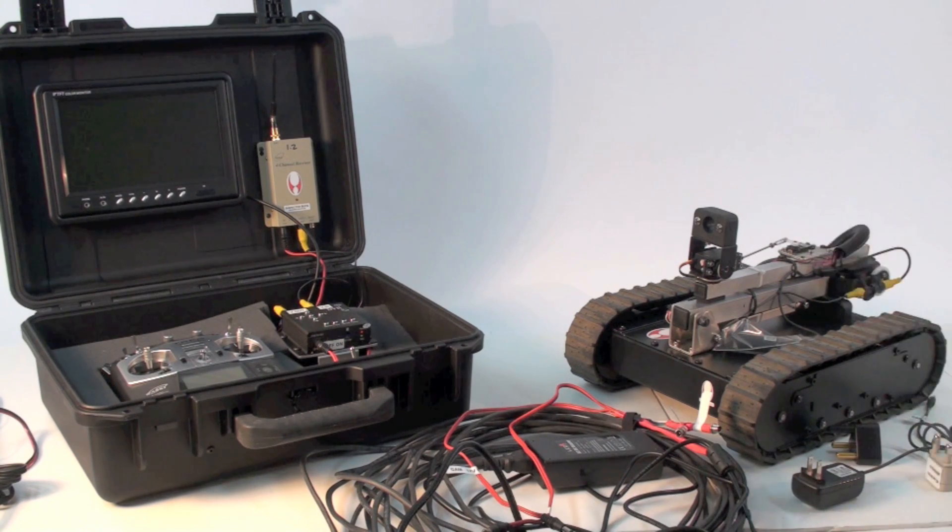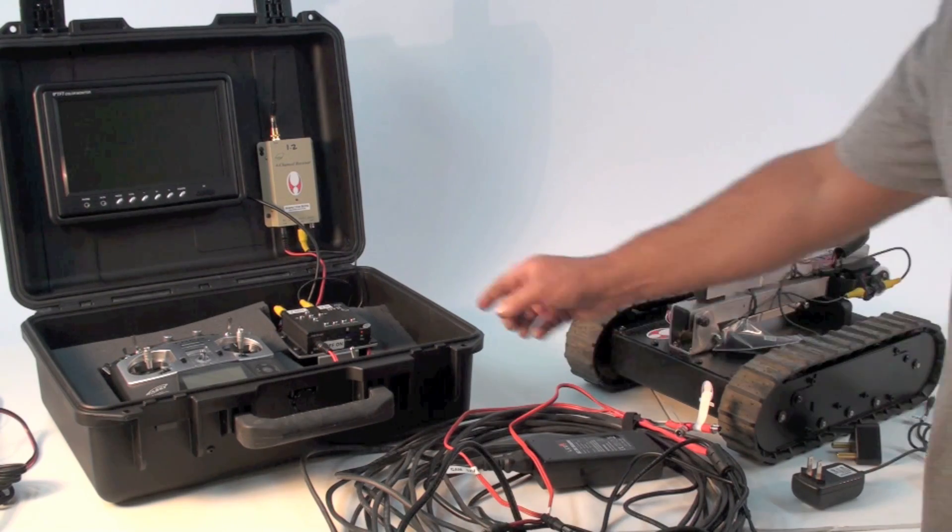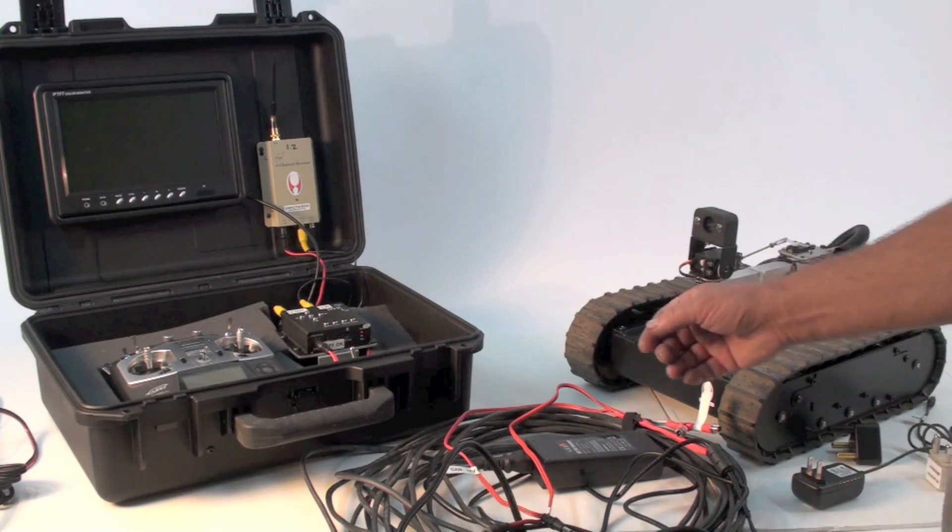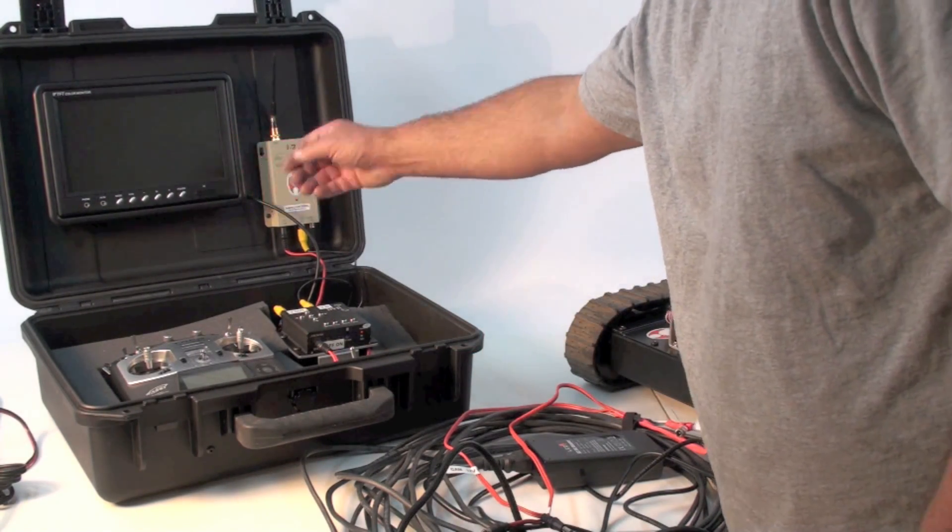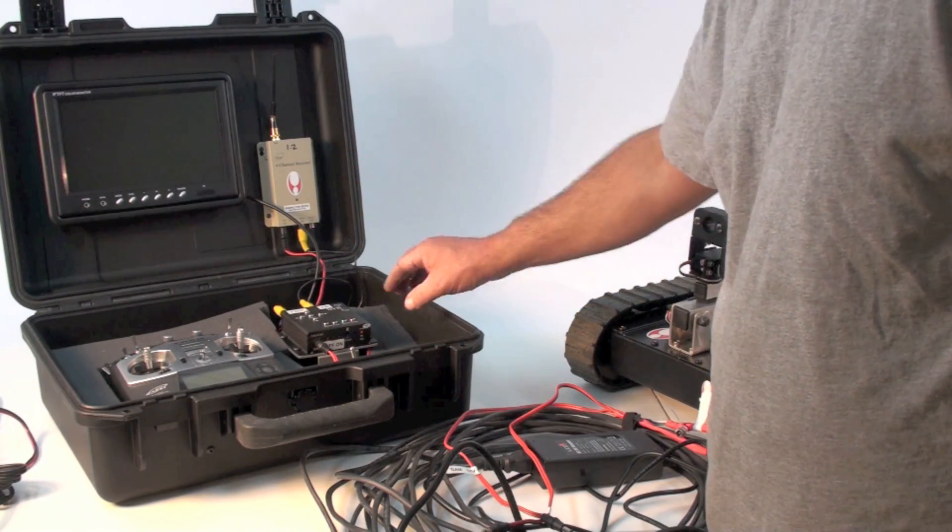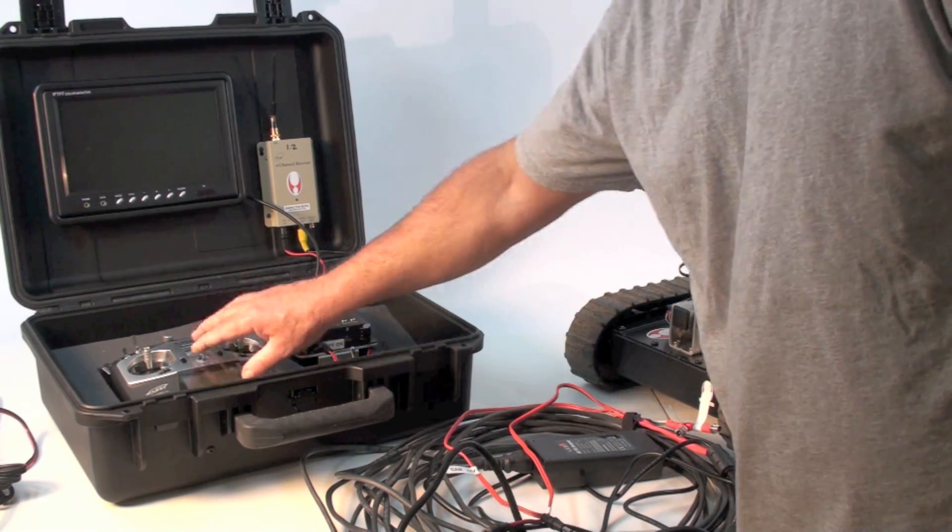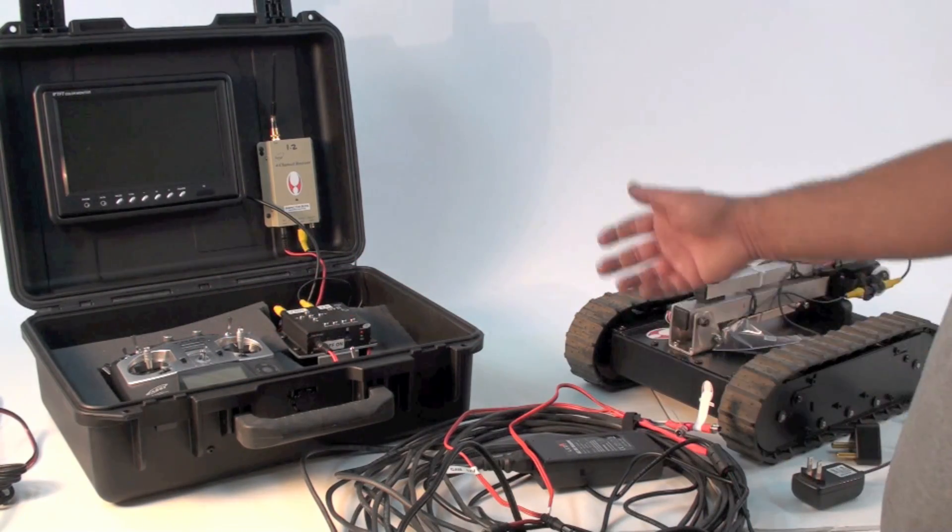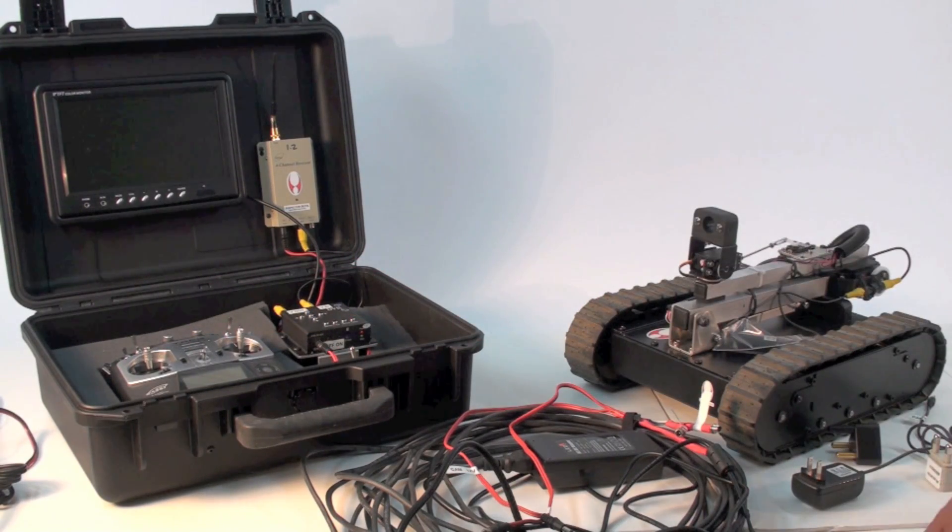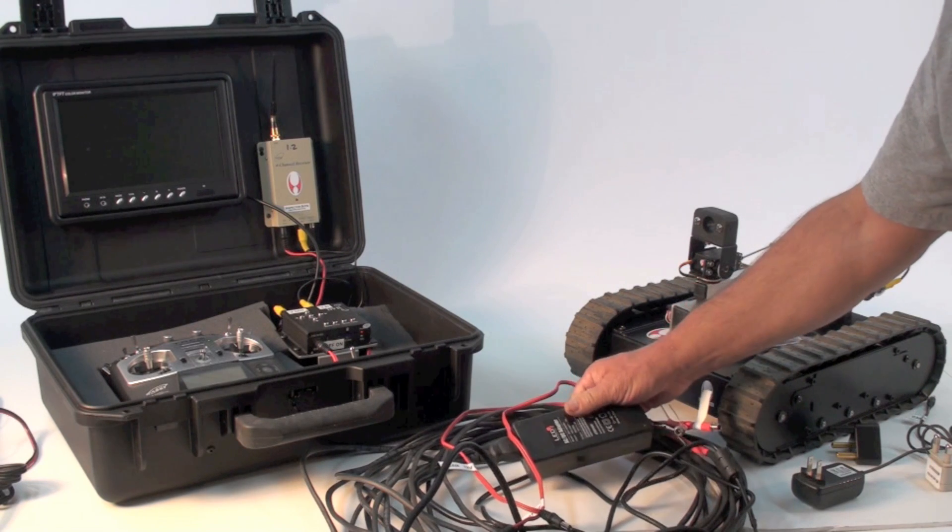This is the Trackbot with a 24-inch arm and it comes with the OCU. The OCU has a 9-inch monitor, a video receiver, a DVR with an SD card, and the radio. This is set up so that you can plug everything in using AC adapters.